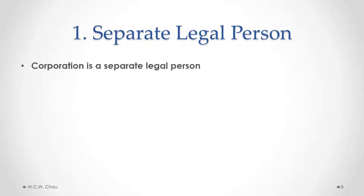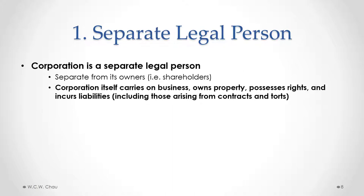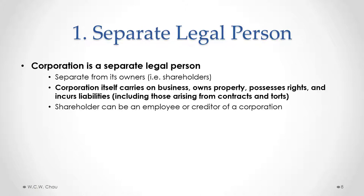In contrast to a sole proprietorship or a partnership, a corporation is a separate legal person — it is separate from its owners, the shareholders. Because it is a separate legal person, a corporation can do almost anything legally that a human person can do: it can carry on business, own property, possess rights, and incur liabilities. A shareholder can be an employee or creditor of a corporation, because the corporation is a separate legal person — it can hire a shareholder as an employee, or a shareholder can lend money to the corporation.